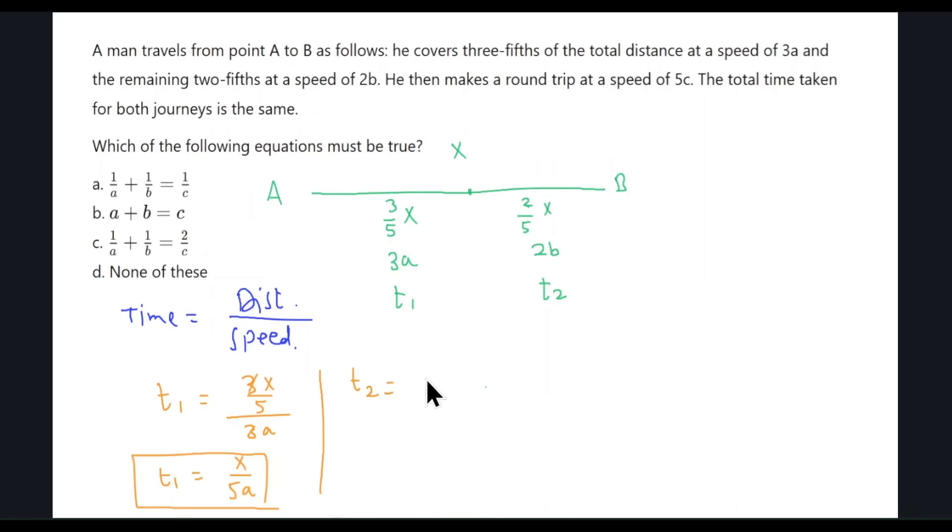Likewise, I'll find T2, that is also distance over speed 2B. I'm left with X over 5B, that's T2. And then we need to find T3 when he takes a round trip. Remember, round trip would mean that he's now at B, so he goes from B to A and then comes back to B. It means that he travels a total of 2X distance at a speed of 5C, so this is T3. The two journeys are in the same time, which means that the total time of journey 1, that is T1 plus T2, should equal the total time of journey 2, that is T3.